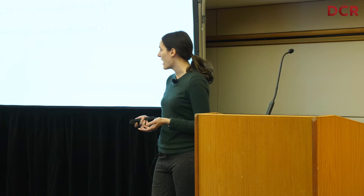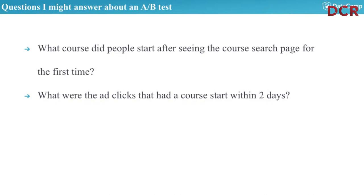For example: what about a subscription rate? If I had a pricing page, what course did people start after seeing the course search page for the first time? What were the ad clicks that had a course start within two days? These are time-based questions, and this sounds simple but I want to walk through three users to show some of the challenges.